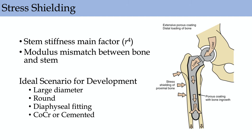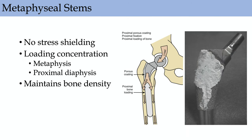Stress shielding: the major determinant is stem stiffness — to a factor of four. There are different modulus mismatches between bone and stem. With a cobalt-chrome stem, the mismatch in modulus of elasticity leads to stress shielding. The ideal scenario for stress shielding is a large diameter round diaphyseal fitting stem. Stems are now typically titanium to decrease stress shielding because titanium is more similar to bone. For metaphyseal stems, you don't see much stress shielding because load concentration is in the metaphysis and proximal diaphysis.